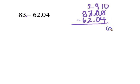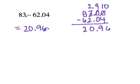So 10 minus 4 is 6, 9 minus nothing is 9, 2 minus 2 is 0, and then 8 minus 6 is 2. So my answer is 20 and 96 hundredths. So again, please make sure when you're adding or subtracting decimals, you need to make sure you line up your decimals. It's very important.